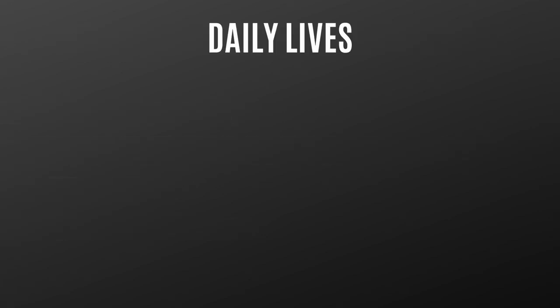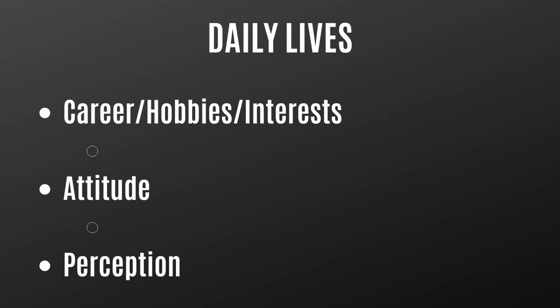Now let's move on to the second category: daily lives. This involves things like your character's career, hobbies, and interests, as well as their attitude and perception. Career, hobbies, and interests often determine the jargon a character uses — special words or expressions used by members of a particular group that are often difficult for outsiders to understand. So a doctor might use fancy scientific language, a lawyer might use legal jargon, and a basketball fan might describe something easy as being like a layup.